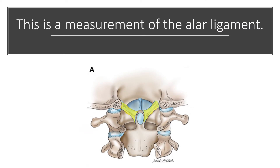The measurement we're going to be looking at today is a measurement of the alar ligament. The alar ligament comes from the dens — the dens is this tooth-like process right here. You can see the yellow ligaments coming from either side of that dens, going up to the skull. That's called the alar ligament.